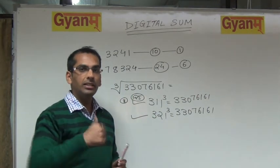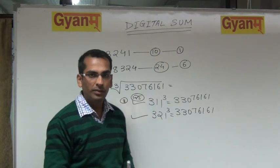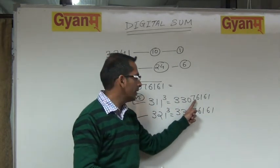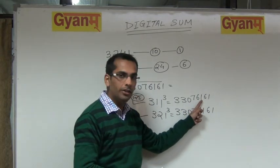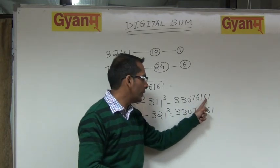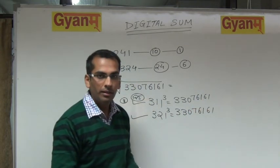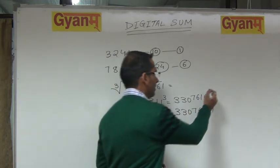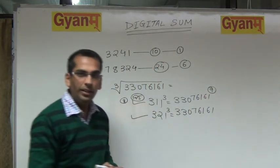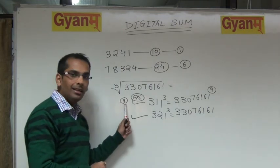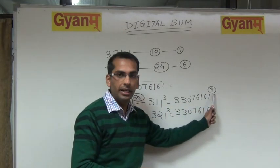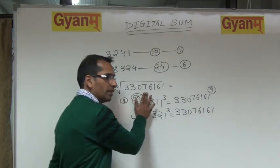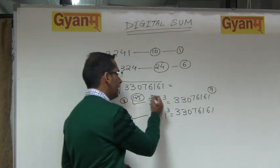Let us check the digital sum on the right-hand side: 33,076,161. 3 plus 3? 6. 6 plus 7? 13. 13 plus 6? 19. Plus 1? 20. Plus 6? 26. Plus 1? 27. The digital sum of 27 is 2 plus 7? 9. On the left side we got 8, on the right side 9. So I can say the cube root of this number is not 311.